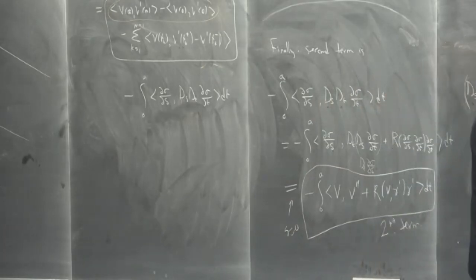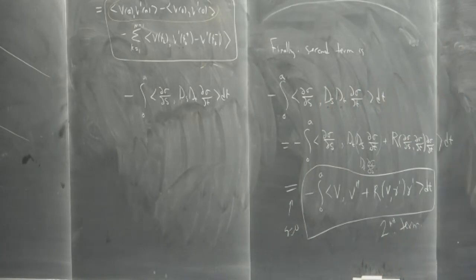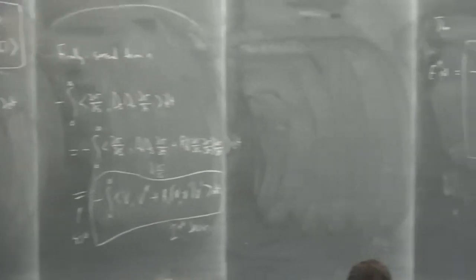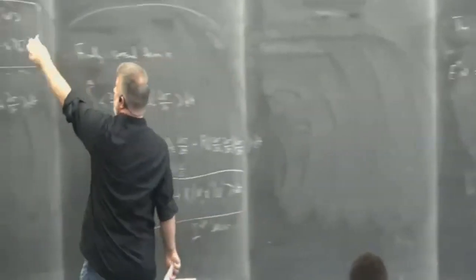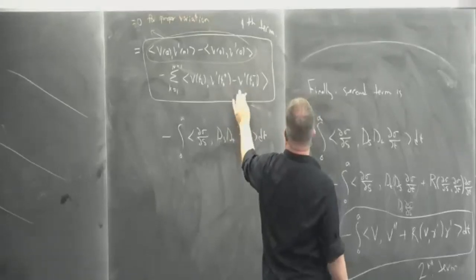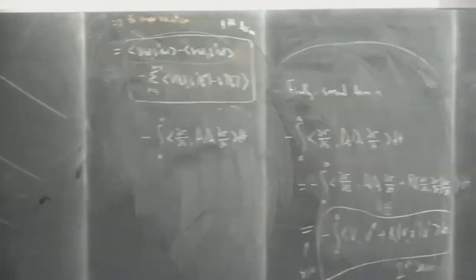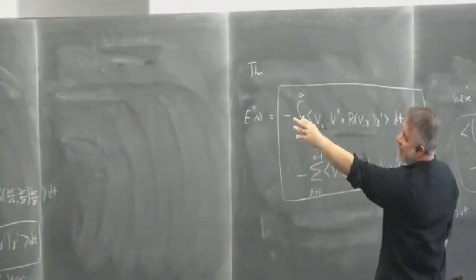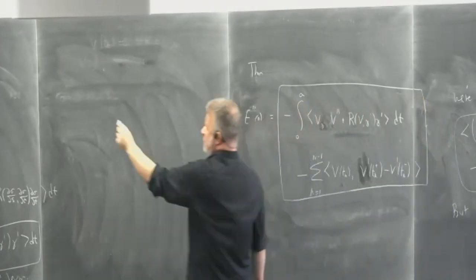For the second term, using the symmetry lemma again and the formula for commuting covariant differentiation along a parametrized surface: D_S D_T d sigma dT equals D_T D_S d sigma dT plus R applied to d sigma dS, d sigma dT, d sigma dT. At S equals zero, d sigma dS becomes V and d sigma dT becomes gamma prime, giving V double prime plus R of V, gamma prime, gamma prime. So the second term is minus the integral from zero to A of V inner product with V double prime plus R of V, gamma prime, gamma prime dt. Combining: the first term was zero, the third term vanished for proper variations, and we have the sum from the fourth term and the integral from the second term — which is exactly the stated formula.